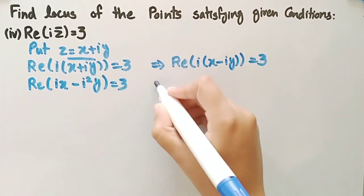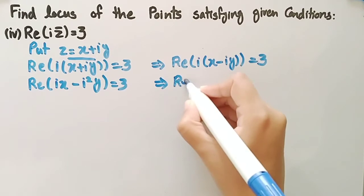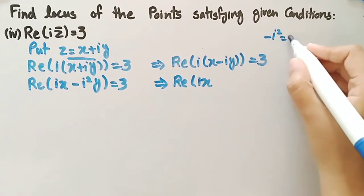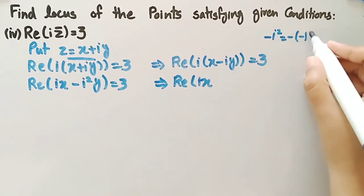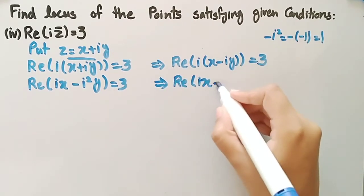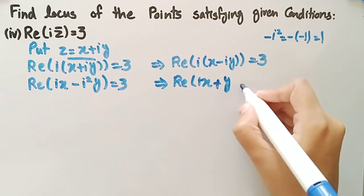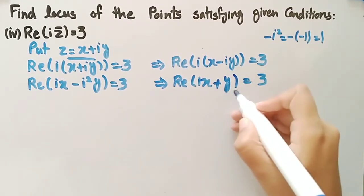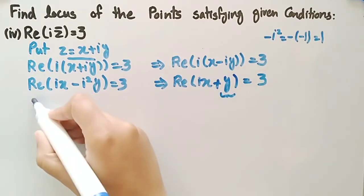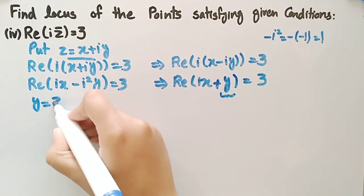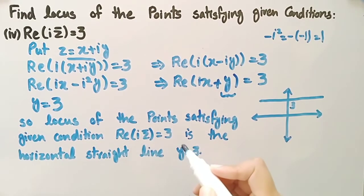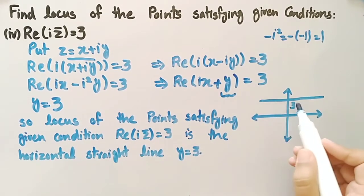Multiplying through by iota we get real part of iota x minus iota squared y equal to 3. Since iota squared equals minus 1, this becomes real part of iota x plus y equal to 3. Taking the real part of this expression gives us y equal to 3. So the locus of points satisfying the given condition real part of iota z conjugate equal to 3 is the horizontal straight line y equal to 3.